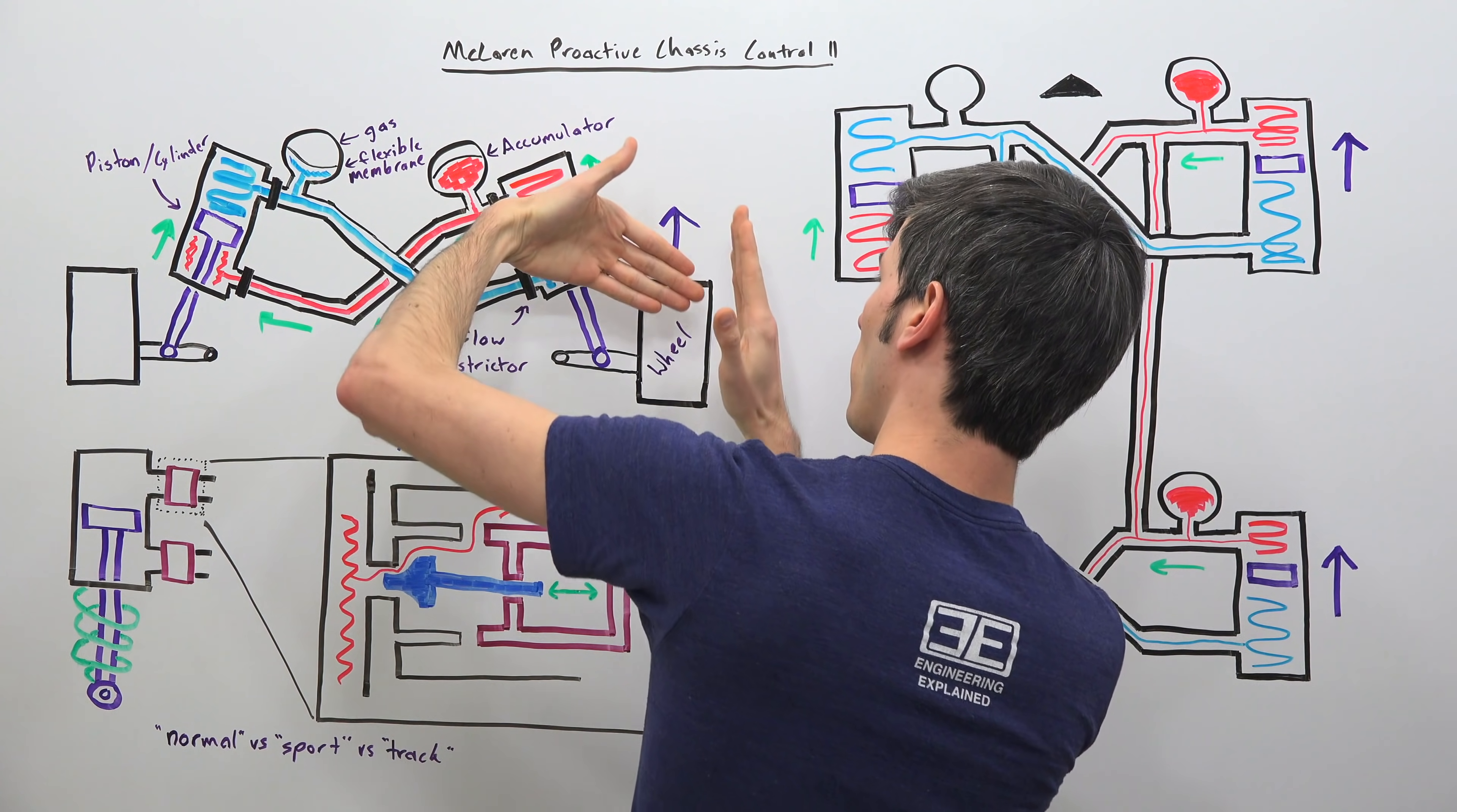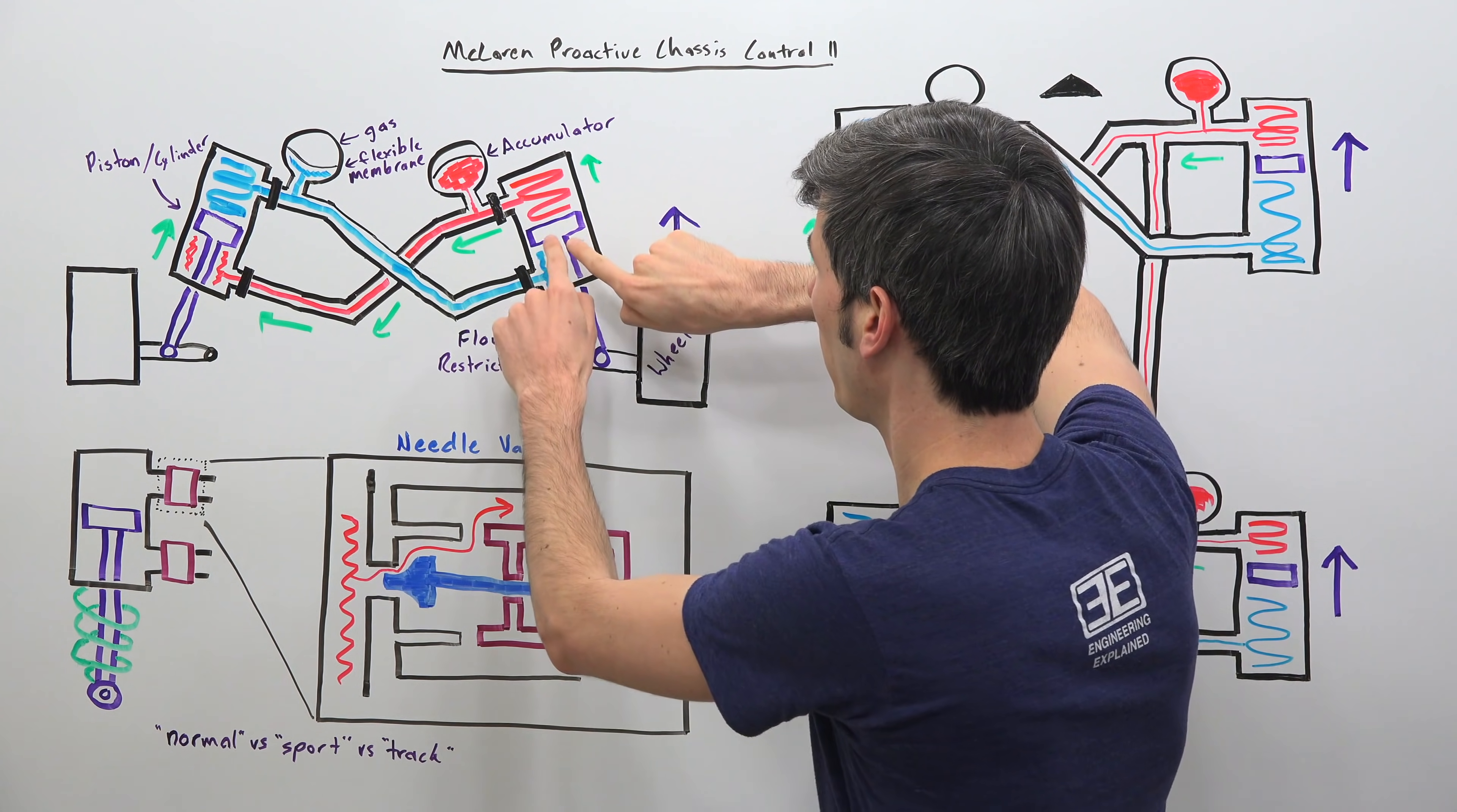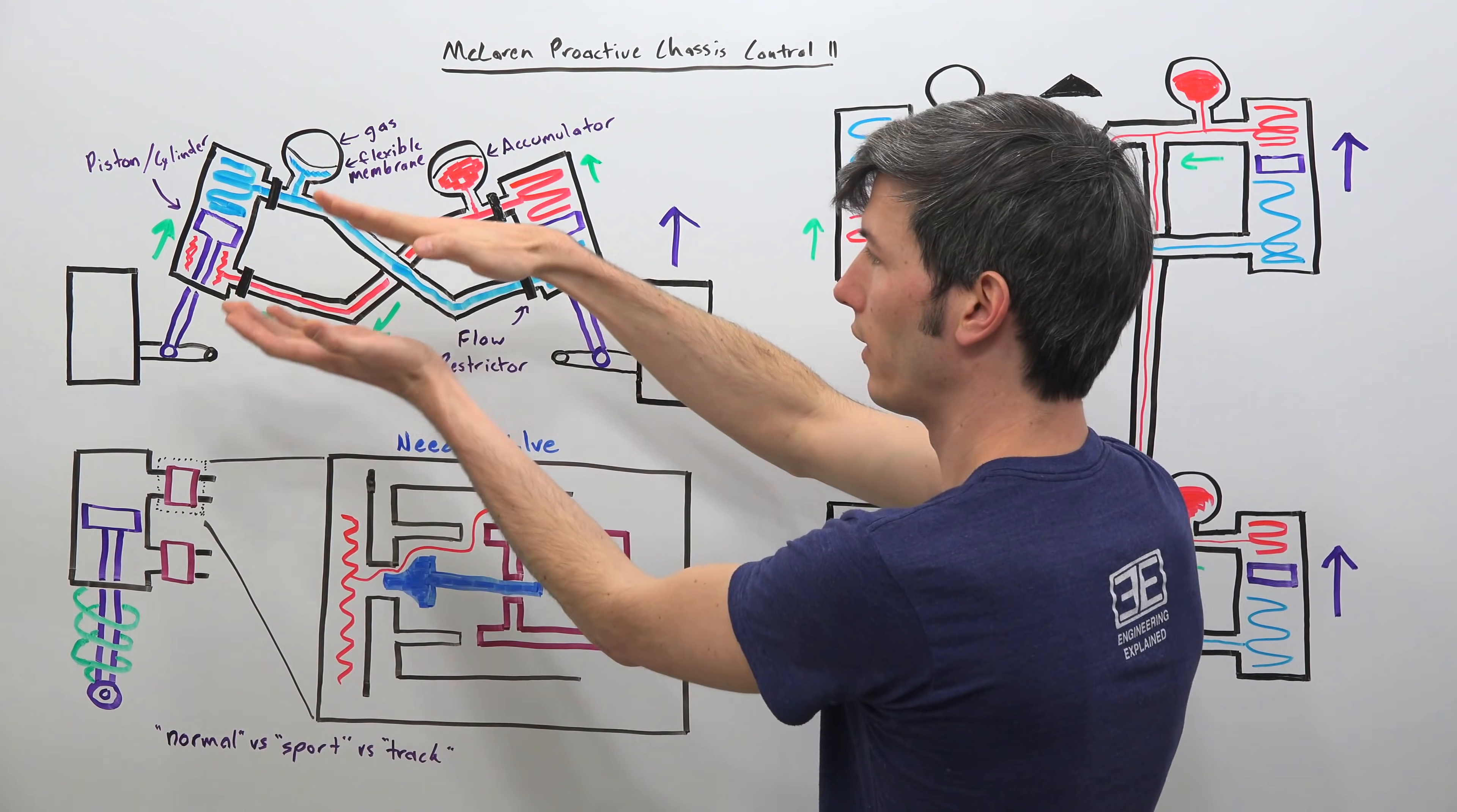So the body of the car wants to roll down, the wheel kind of coming up here, and so in doing so this piston is going to press this fluid right here, apply a high pressure to that fluid which is going to force it to travel over to the other side.